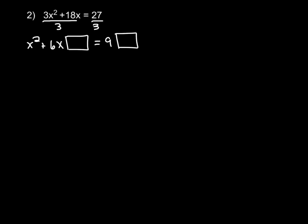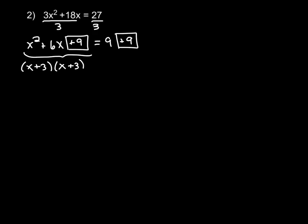So just to remind you, in order to find the number that goes inside our box, we look at the term before it, and we're going to take half of this number and then square it. So half of 6 is 3, and 3 squared is 9. So you're taking half of that number and squaring it, and we're adding 9 to both sides. Now we're going to factor this, and two numbers that multiply to 9 and add to 6 are 3 and 3. So we're going to have x plus 3 and x plus 3. And remember, when you go to factor this, if your factors are not the same, it means you made a mistake somewhere. We can rewrite x plus 3 times x plus 3 as x plus 3 squared.